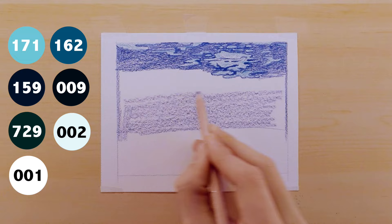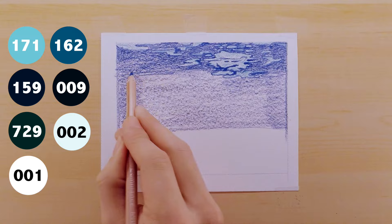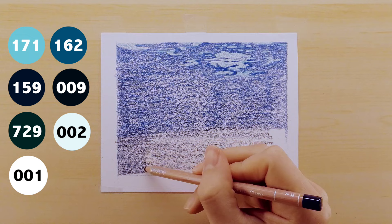Once you have a nice layer of that color, you're going to switch to the 159 pencil and you're going to kind of create a nice gradient about two-thirds of the way up and then all the way down to the bottom of the paper.